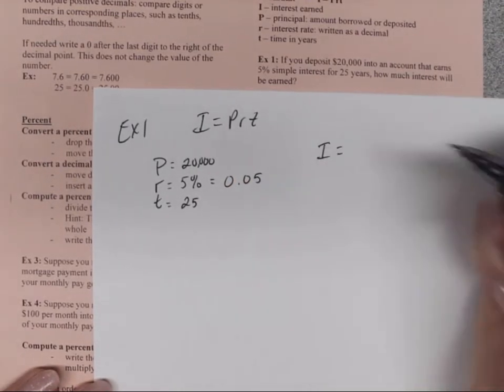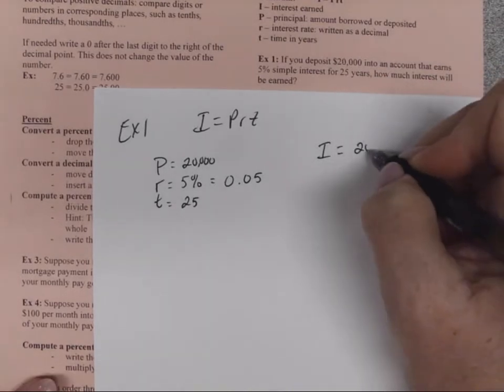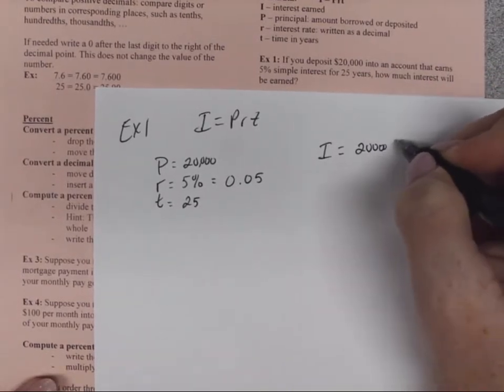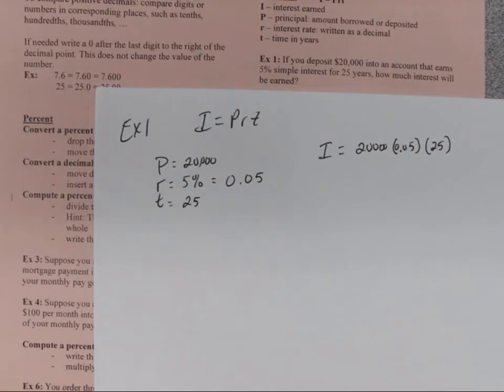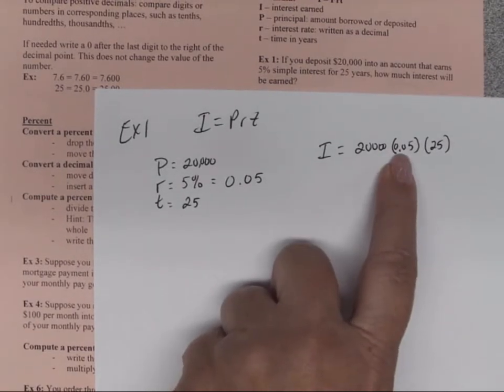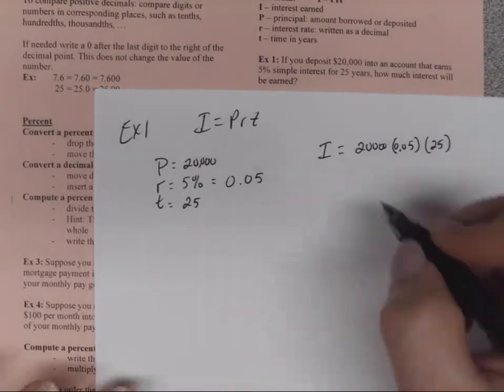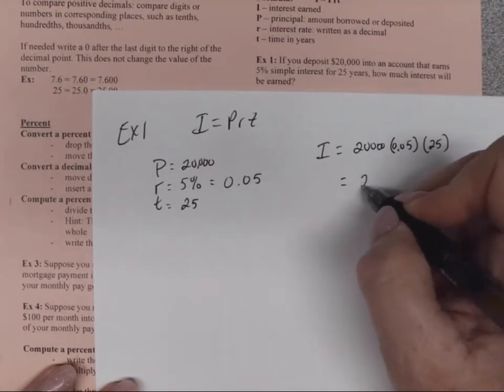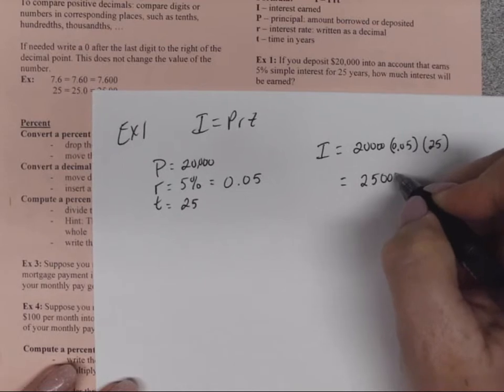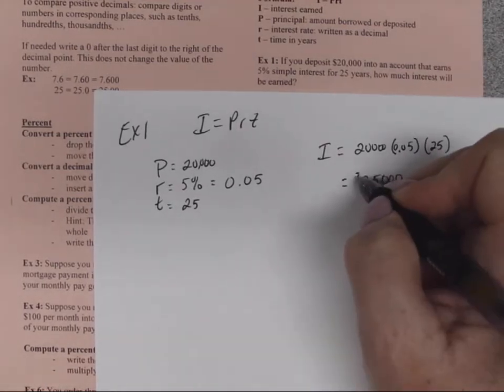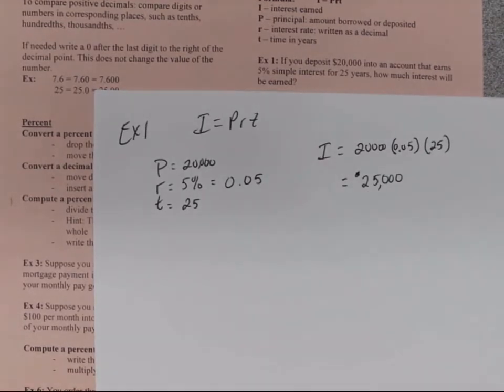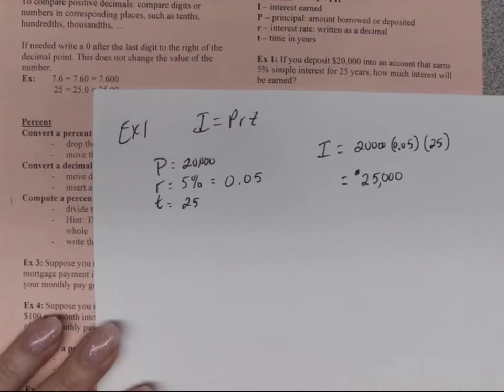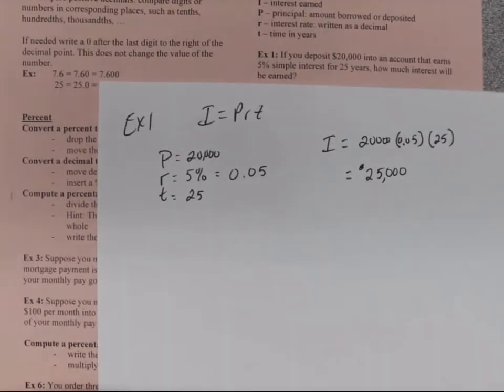So to find the value, we're just going to plug all those values in. So we have 20,000 times 0.05 times 25. But make sure you put that zero after that decimal place right there. Otherwise it will give you a wild number. So I is equal to $25,000. So what that tells us is that over 25 years, we have gained $25,000 in interest. That's not the total in the account, that's just the interest we're finding.